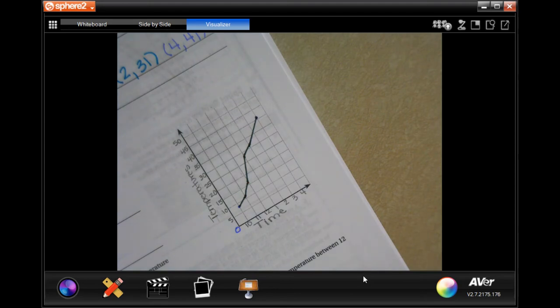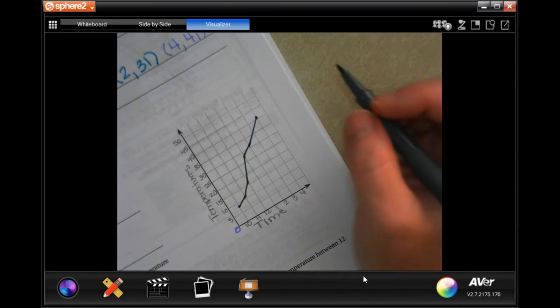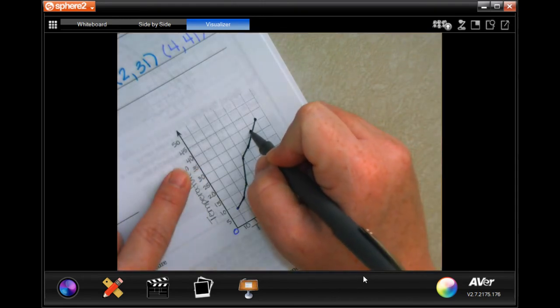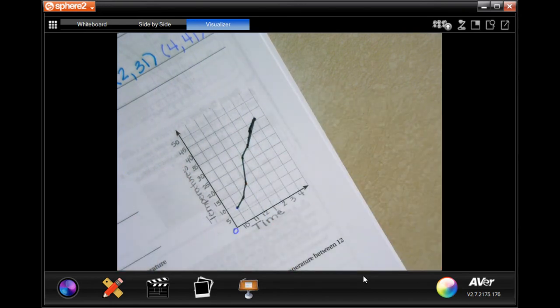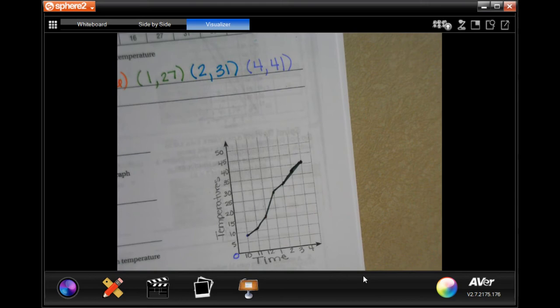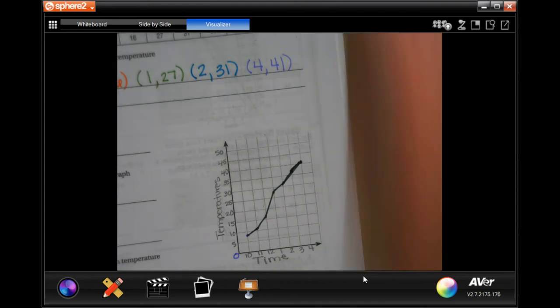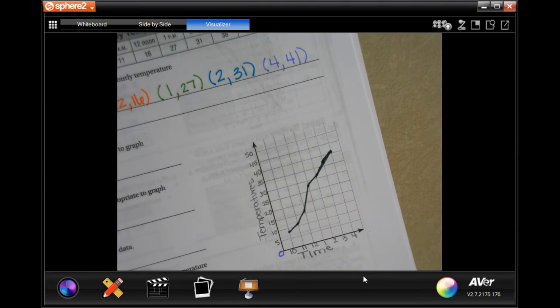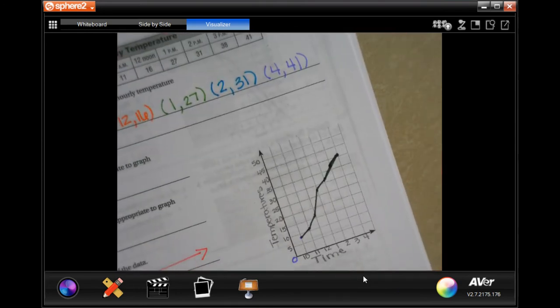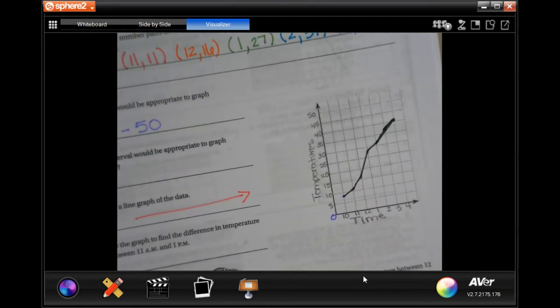This is kind of what our graph should look like. Oh no, okay guys, so that's all right, it's going to be right about there anyway. So we're going to go like this, and then we're going to go like that. You guys are going to be doing a thin pencil, so you'll be able to do a lot better than I did. So that's kind of what your graph should look like. We made a line graph of the data. We did that.